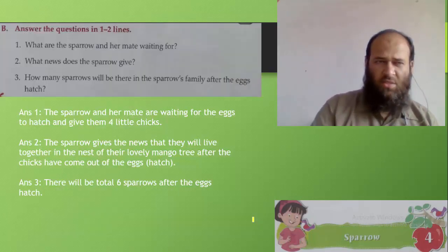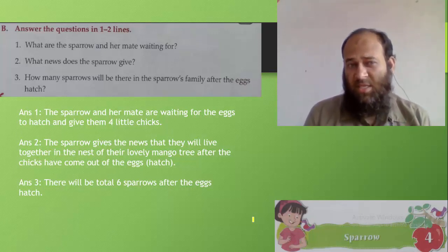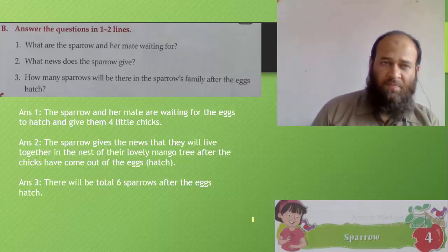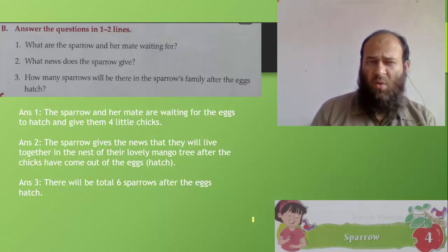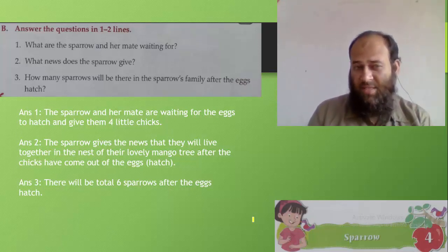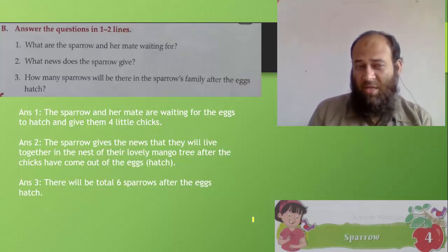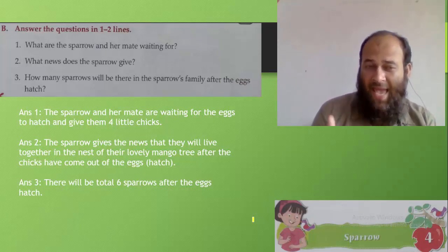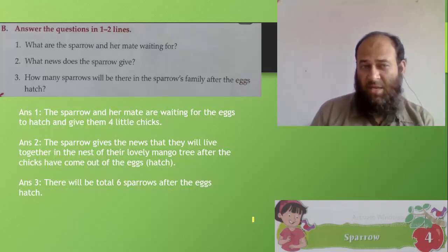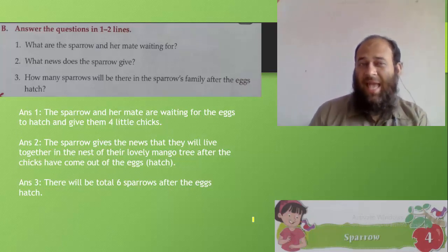We have other questions here. What are the sparrow and her mate waiting for? The sparrow and her mate are waiting for the eggs to hatch and give them four little chicks. What news does the sparrow give? The sparrow gives the news that they will live together in the nest of their lovely mango tree after the chicks have come out of the eggs — after they hatch. How many sparrows will there be in the sparrow's family after the eggs hatch?